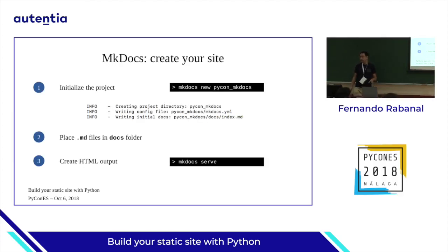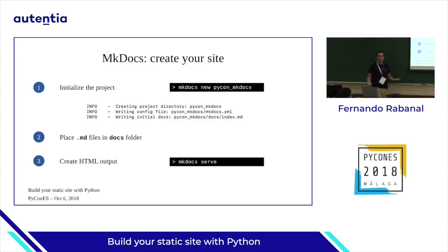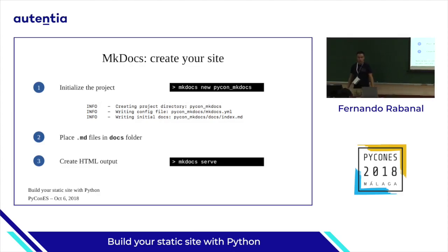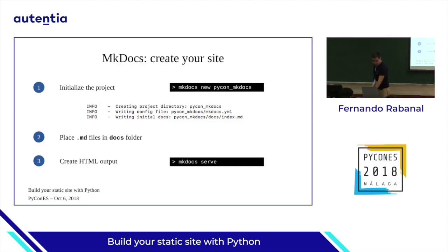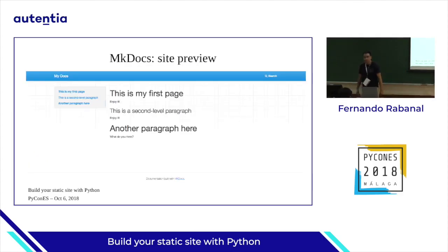So, how do we create our site in MkDocs? We are in the terminal and we say: mkdocs new, make a new page and call it bicon.mkdocs. And it responds: creating the project directory, creating the config file — because it's in YAML language, also a very simple language for config files — and then it writes an index. This is the first step. You place your own files in the docs folder that was created. It creates the site folder, docs folder, and a sample file. You can put your own Markdown files there, and then create the output: mkdocs serve.